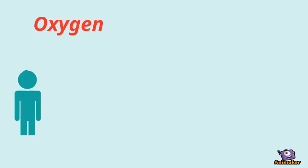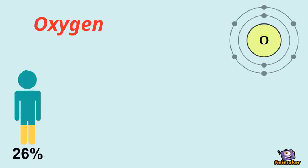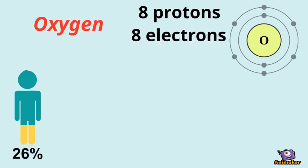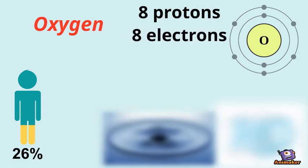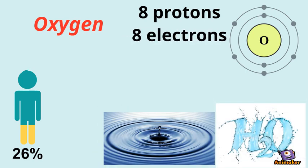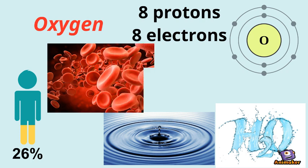Oxygen makes up about a quarter of the total atoms in our body and consists of eight protons and electrons. Like hydrogen, it's found in water, but oxygen is also carried around the body in the bloodstream.